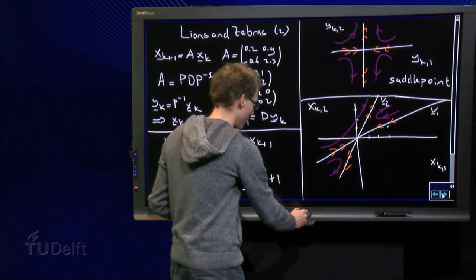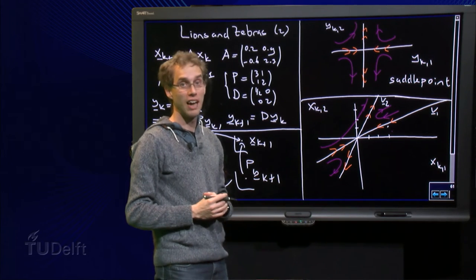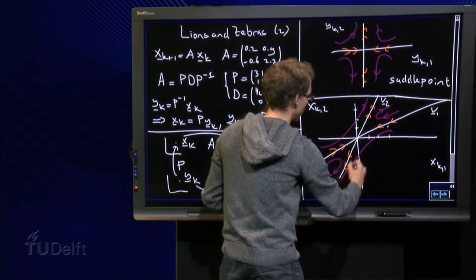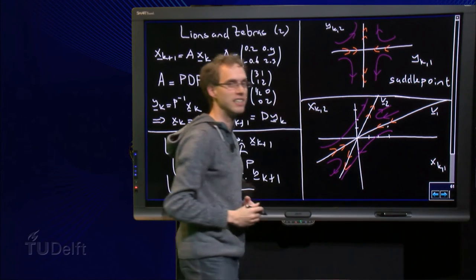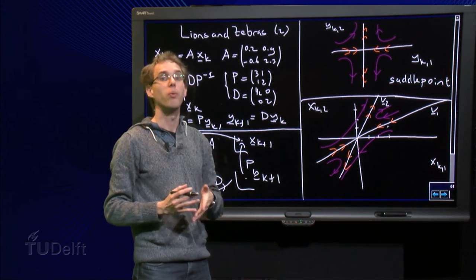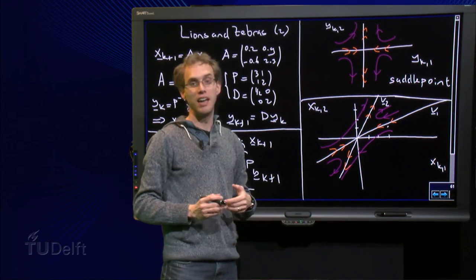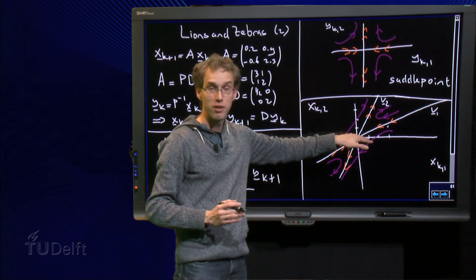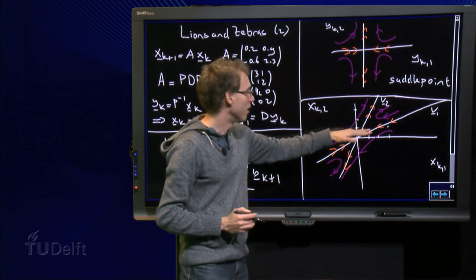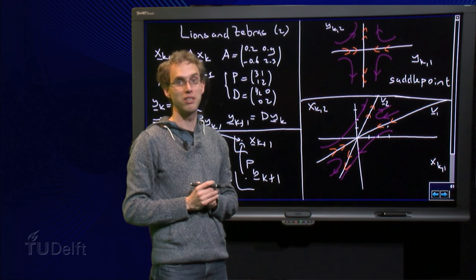However, if we start over here, for example, with a large amount of lions and a small amount of zebras, then it goes horribly wrong. See what happens? He somewhere hits the axis, and at that point there are no zebras anymore. Well the model doesn't hold of course anymore from that point on, there are no zebras, no zebras left first, and then eventually of course the lions die out as well. So if there are a lot of lions and a few zebras, then too bad, both species will die out eventually.